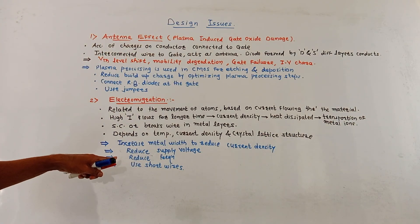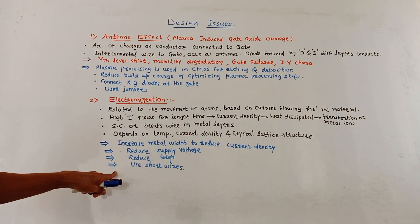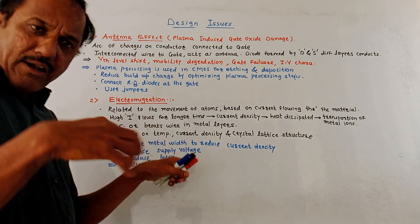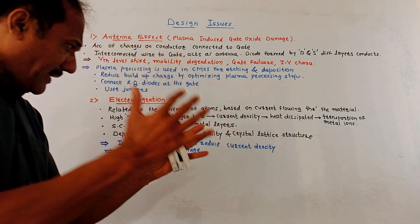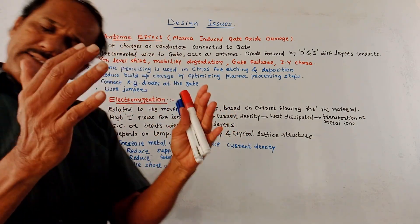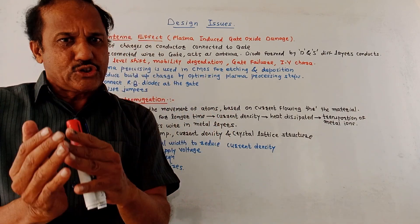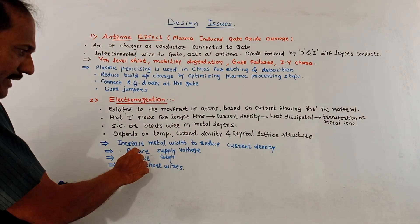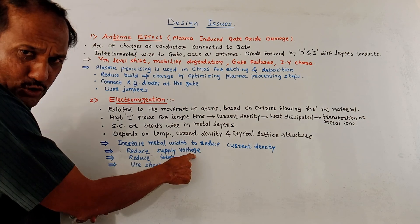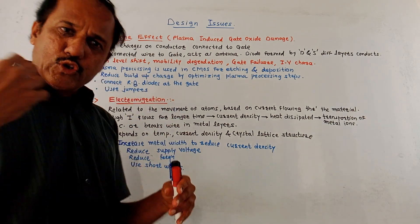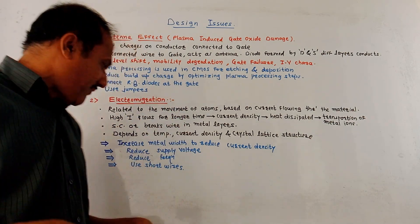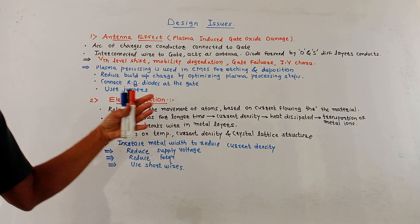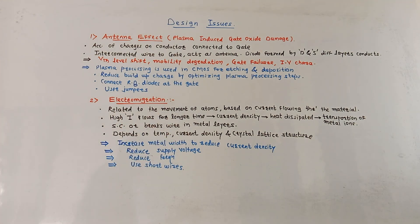To reduce down this electromigration effect, certain steps are required. First, increase the metal width — if you increase the metal width, the current density will get reduced and less heat will be dissipated. You may also reduce the power supply, reduce the supply frequency, and use short wires instead of longer wires.